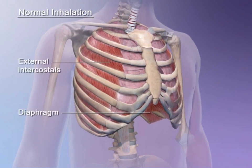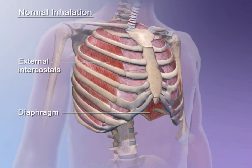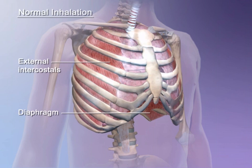During normal inhalation, the diaphragm and external intercostal muscles contract and the rib cage elevates. As the volume of the lungs increases, air pressure in the lungs drops below atmospheric pressure and air rushes in.